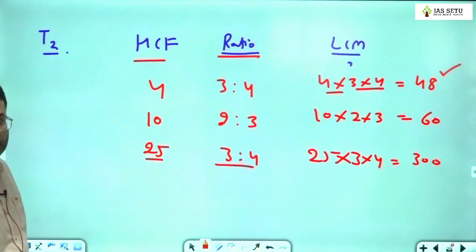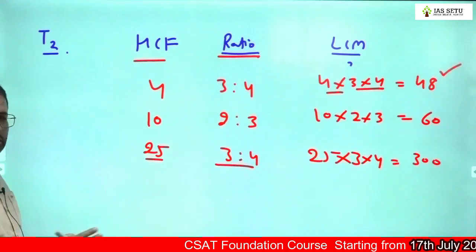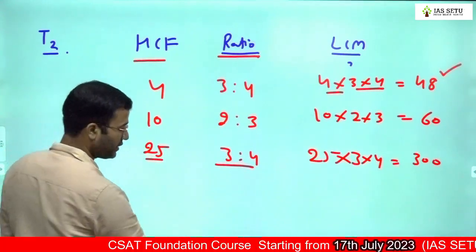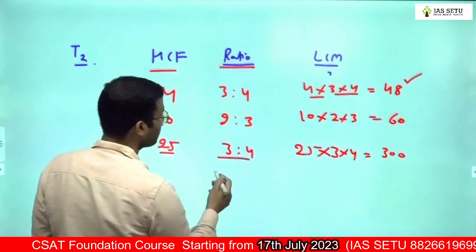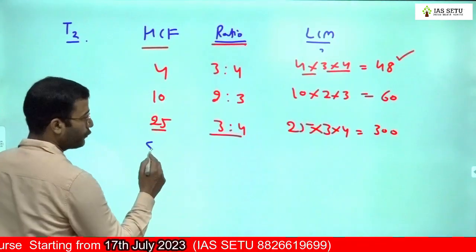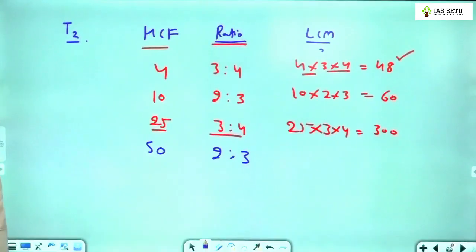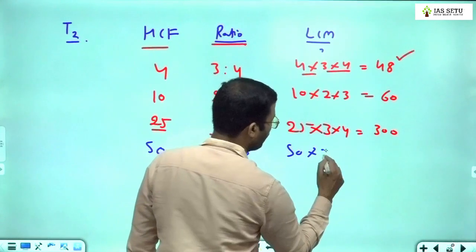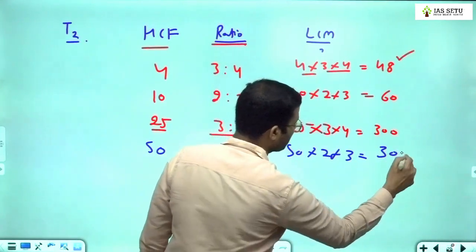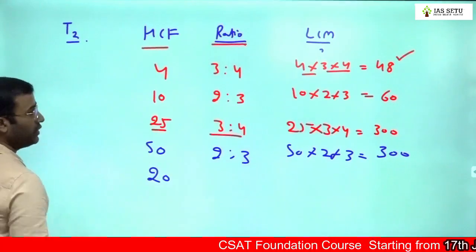Reverse is also applicable. Wait, wait, table first, then you can apply. HCF of two numbers is 50, ratio of numbers is 2:3, tell me what is the LCM? 50 × 2 × 3 = 300.